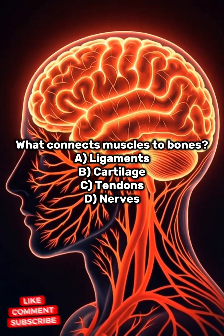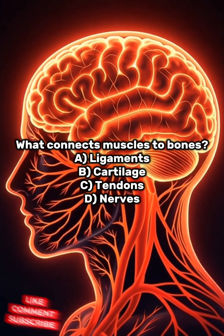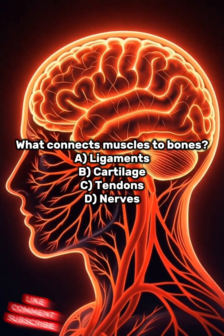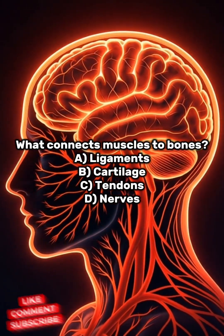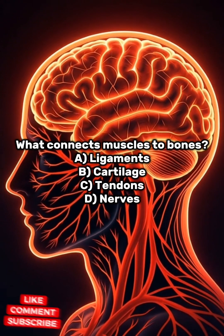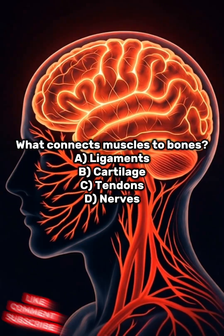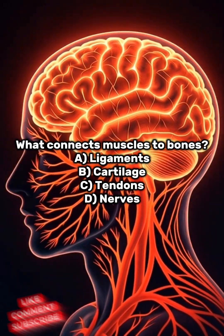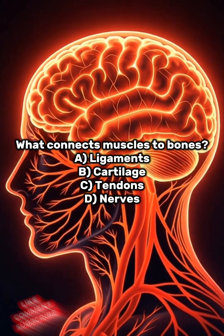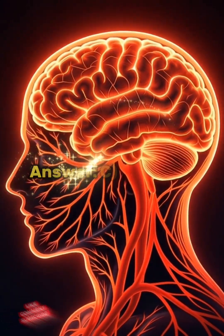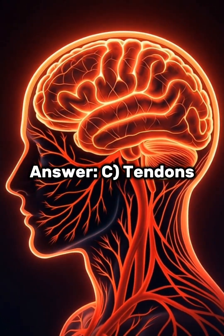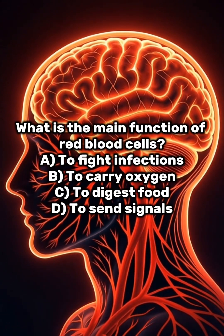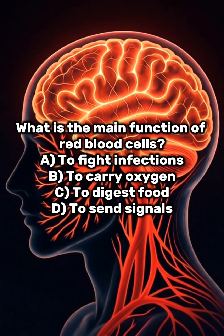What connects muscles to bones? A: ligaments, B: cartilage, C: tendons, D: nerves. Answer: C, tendons.